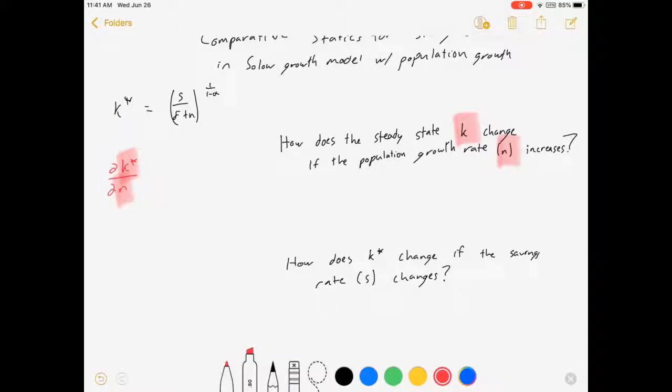Okay, n. Those are the two things I'm interested in. Well, let's see. That is 1 over 1 minus alpha times s over delta plus n.